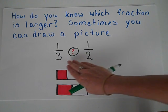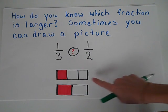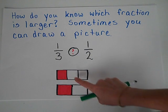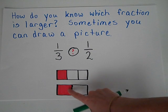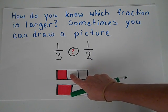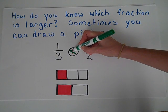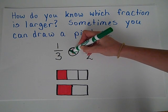When you're only breaking into 3 pieces and 2 pieces, here's 1 third, here's 1 half. You can tell that 1 half is a larger fraction than 1 third. So the alligator mouth is open towards the larger fraction.